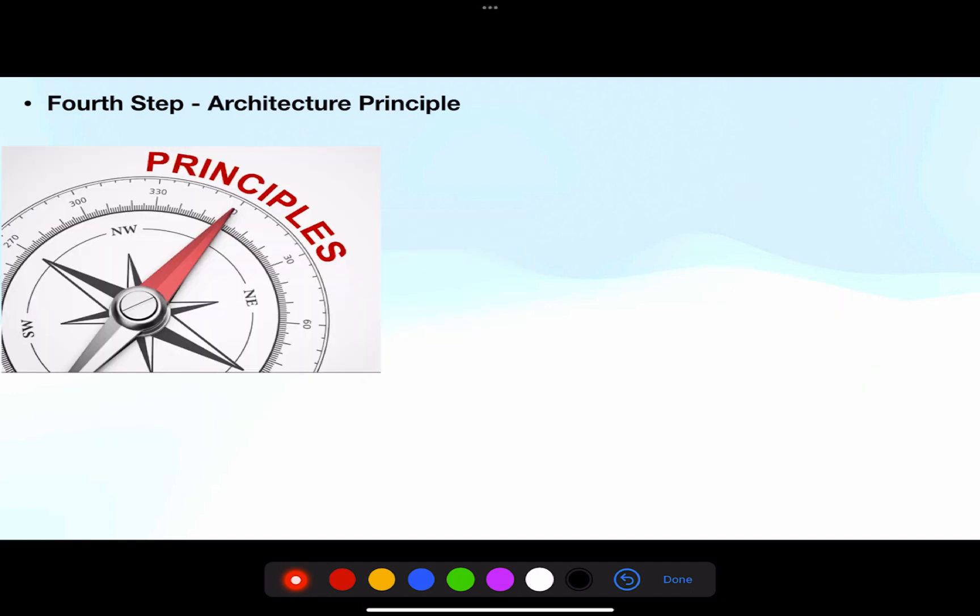Step four is to define the architecture principle. Architecture principle is a guiding force to make architecture decisions. So if there is no proper architecture principle, it's difficult to say no to certain requests. It's a guiding force like a compass which guides you in direction. An example: if in the enterprise you have a principle that for any communication between two applications or systems you need to have a domain API defined, then it becomes a guiding force to not allow any other legacy communication mechanism between applications.